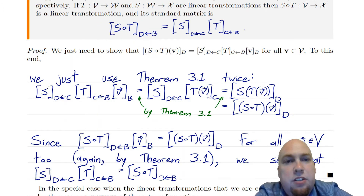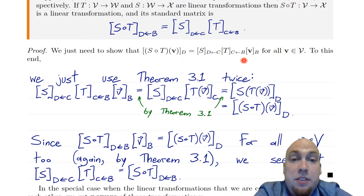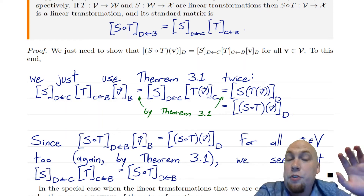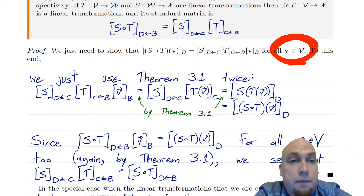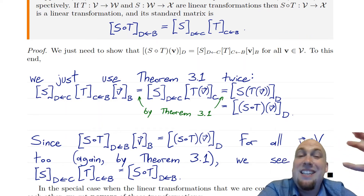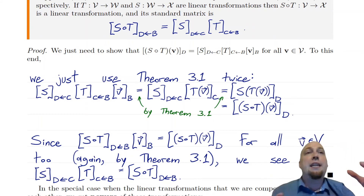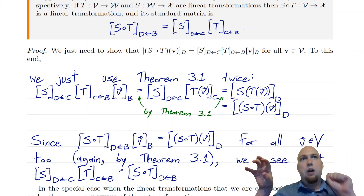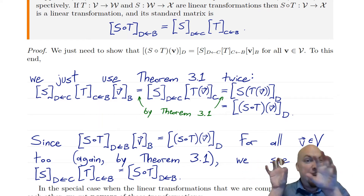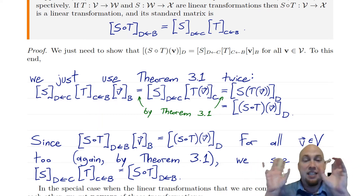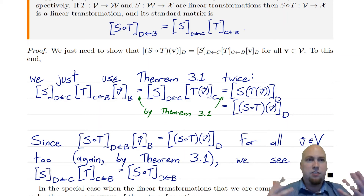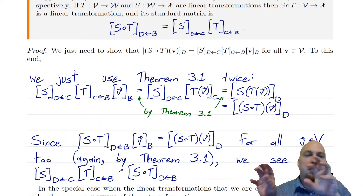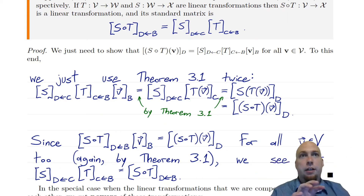So if we can show that this equals instead the product matrix times v_b, and that's true no matter which vector we pick, then these must be the same matrices. It is a fact that if you have two matrices A and B, and A times v always equals B times v, then A and B have to be the same matrix — functions are defined by what they do on their inputs.